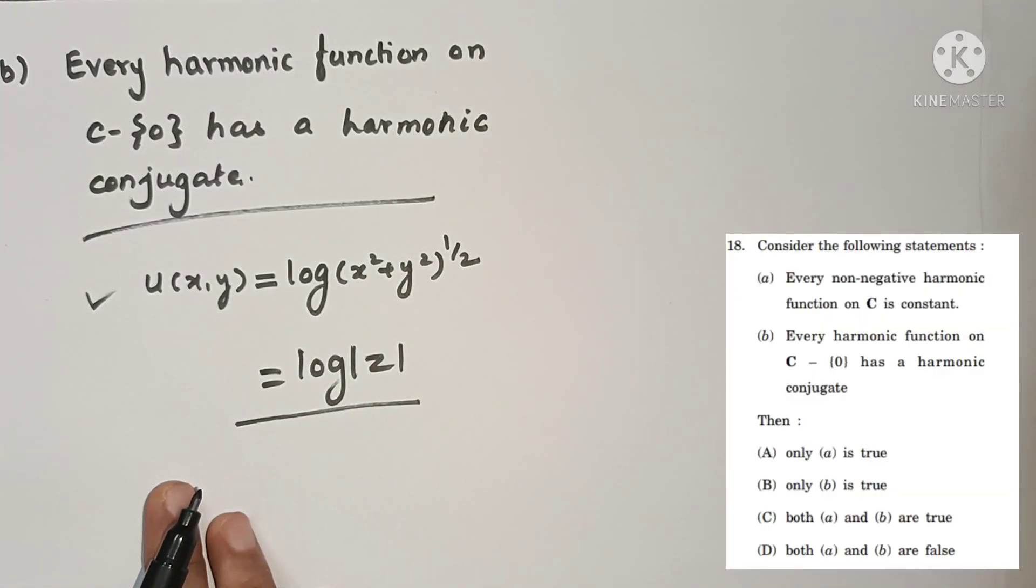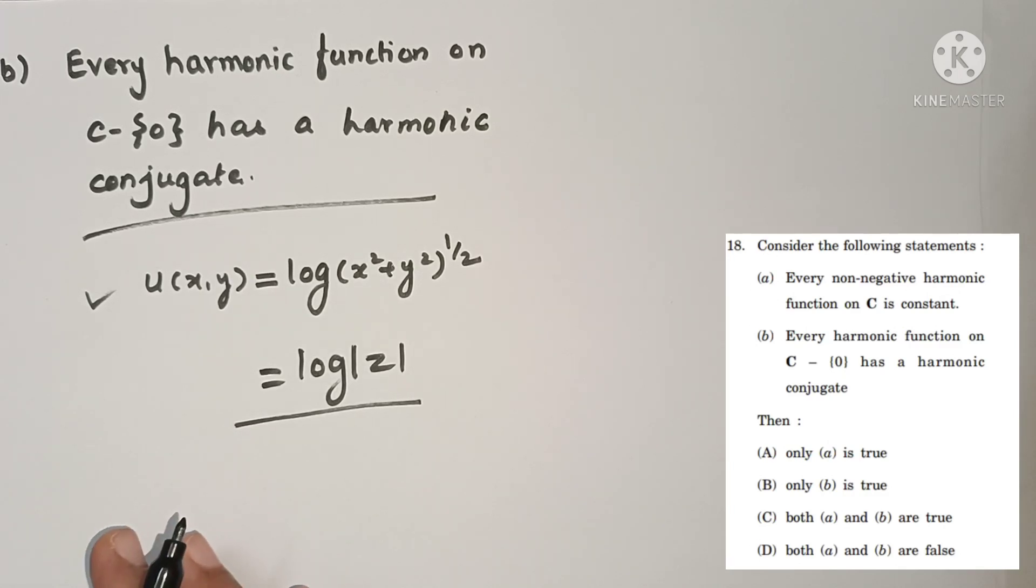Let's see here. Only A is true. Option B: only B is true. Both A and B are true. Both A and B are false.